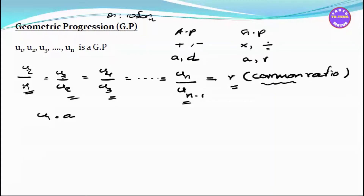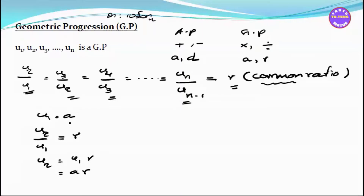So U1 is A, U2 is A·R, U3 is A·R², U4 is A·R³. This is the formula derivation. Starting from U1 equals A, then U2 equals A·R, which gives us the pattern for the nth term.